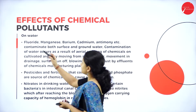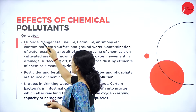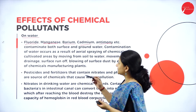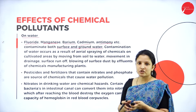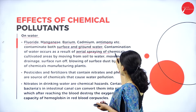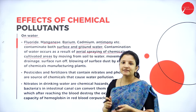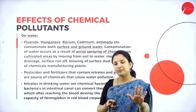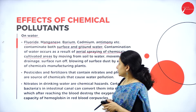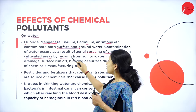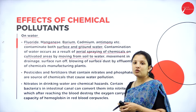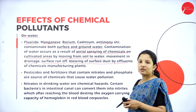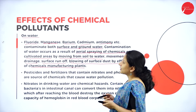The effects of chemical pollutants on water: fluoride, manganese, barium, cadmium, antimony, etc. are capable of contaminating both surface water and groundwater. Water contamination usually results from aerial spraying of chemicals — insecticides, pesticides, etc. — on cultivated areas. A part of the spray falls on the plant and the remainder falls on the ground, causing chemical pollution. These chemicals also move from soil to water through drainage, surface runoff, and blowing of surface dust by effluents of chemical manufacturing plants.